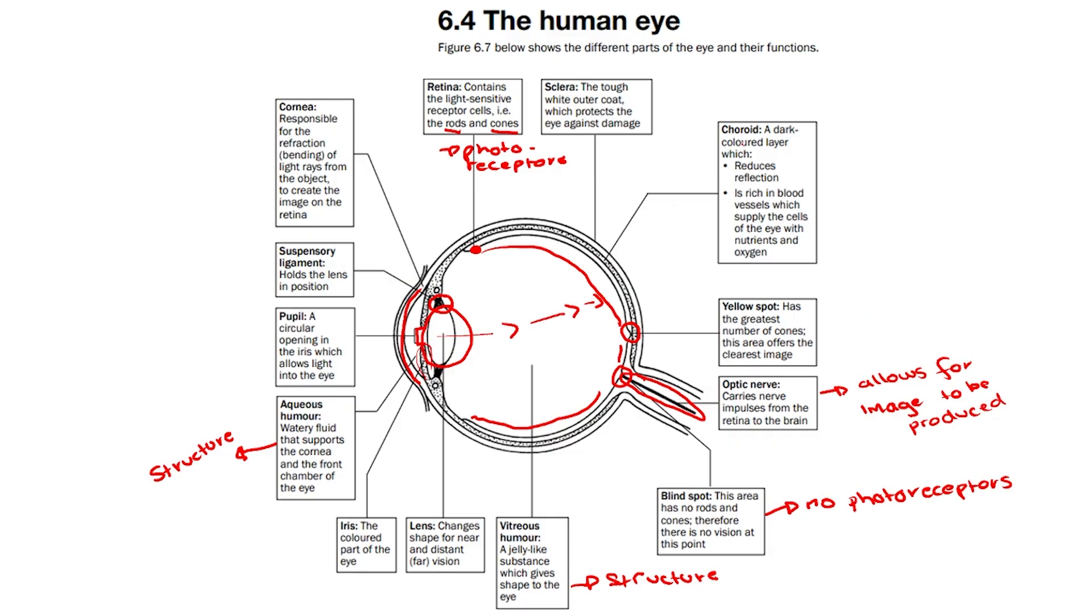Then we have the choroid, which is this dark shaded area behind the retina. It is a dark colored layer which reduces refraction, reflection, and is rich in blood vessels, therefore supplying the cells of the eye with nutrients and oxygen.